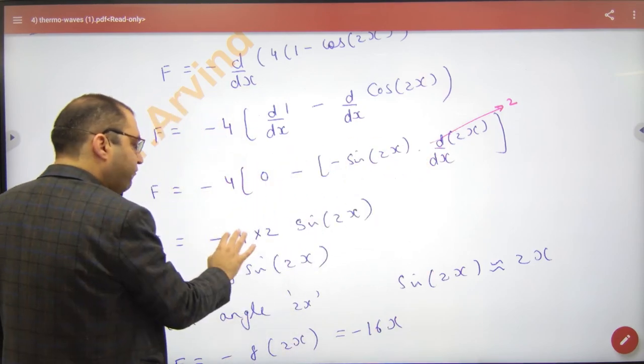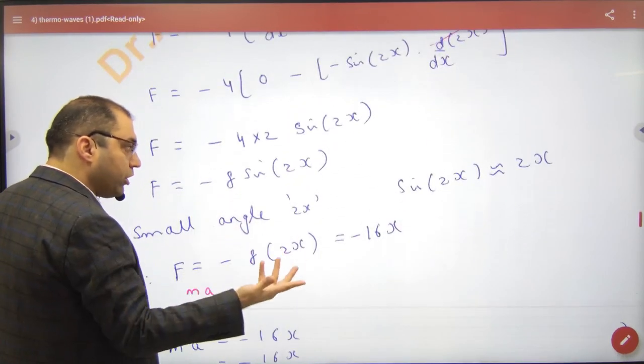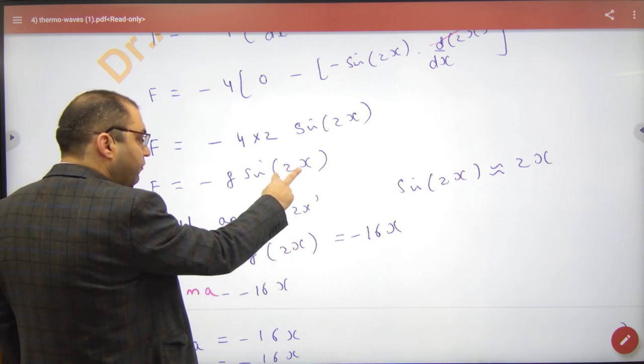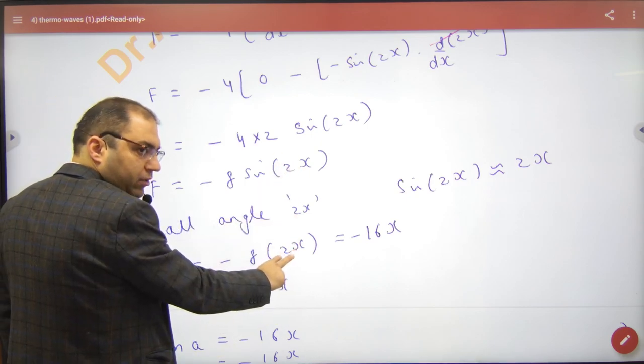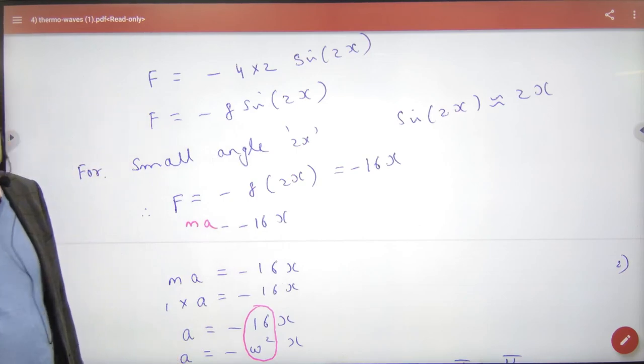2 comes out, 2 times 4 is 8. Angles are small in SHM, so sin(2x) equals 2x. So what will the restoring force be? Minus 16x.